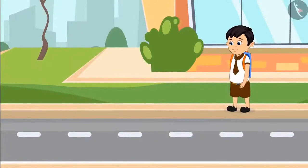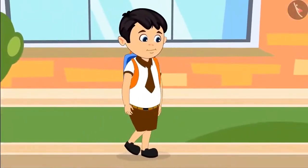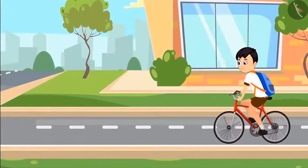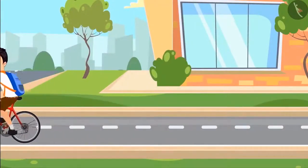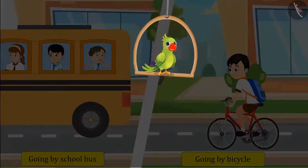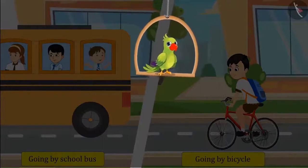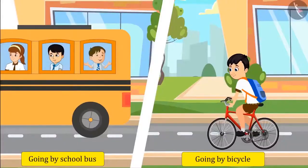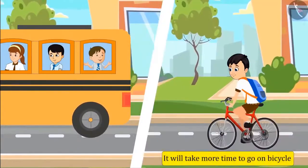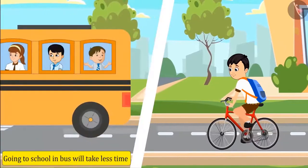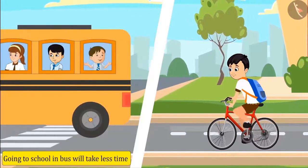Oh no! I missed my school bus! Because he missed his school bus, he took out his bicycle and rode to school on a bicycle. Children, what do you think? Which way will Chotu take more time to reach the school — by his bicycle or by his school bus? It will take more time to go by bicycle, because the bus runs faster than a bicycle.